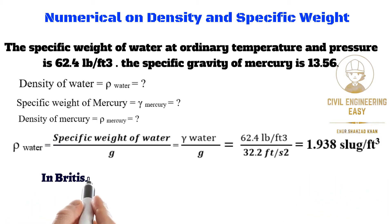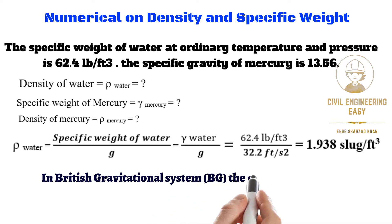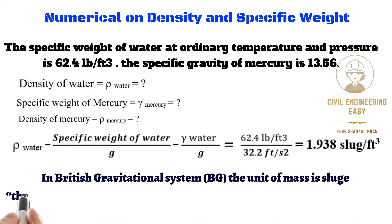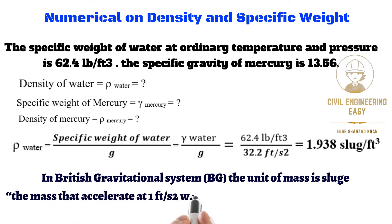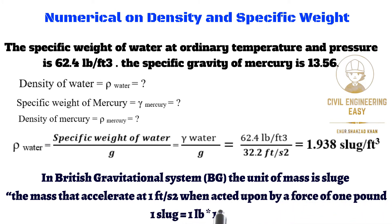In the British Gravitational system, the unit of mass is the slug. It is defined as the mass that accelerates at 1 foot per second squared when acted upon by a force of 1 pound. So 1 slug equals 1 pound multiplied by 1 foot per second squared. If you are confused about how the unit is derived, please watch my previous video related to fluid mechanics.